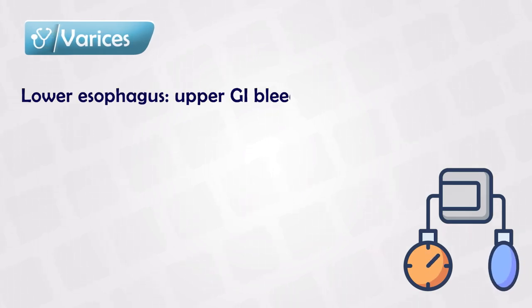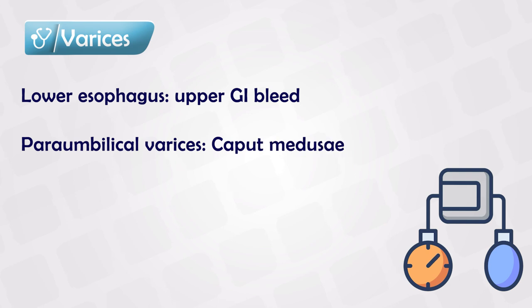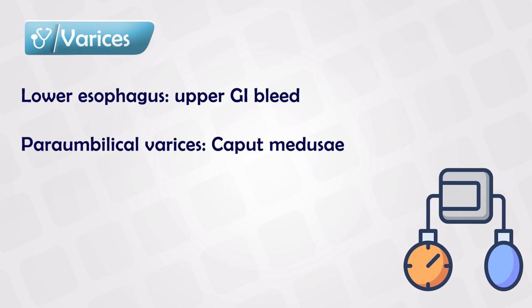Having portal hypertension can cause varices in any one of these areas. Most commonly in the lower esophagus, where the varices will cause upper GI bleed, and the para-umbilical area, where it will cause caput medusae. Again, these are very important.